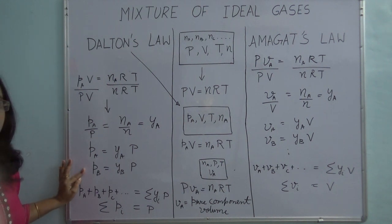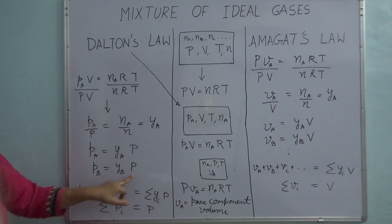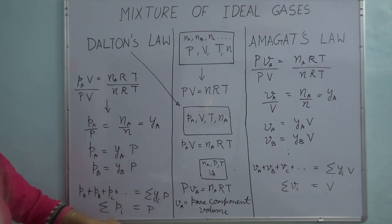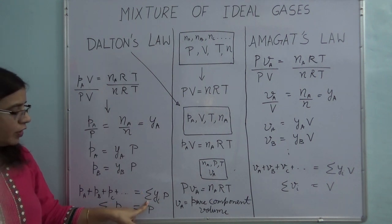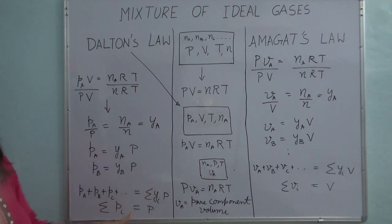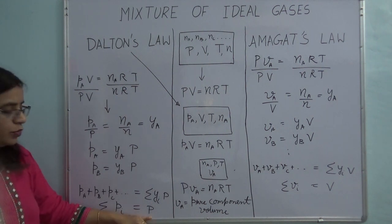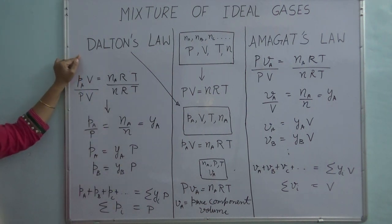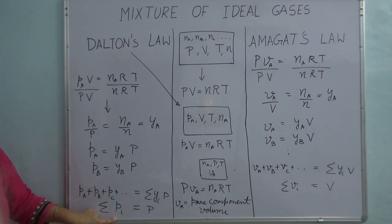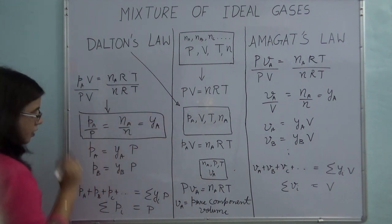Now let's add up all these equations for partial pressure. PA + PB + PC + … = Ya·P + Yb·P + Yc·P + … Since P is constant, I can pull it out of the summation, leaving only ΣYi. The summation of mole fractions always equals 1, so the summation of all partial pressures equals the total pressure. This is Dalton's Law: the sum of all partial pressures equals the total pressure of the mixture, and partial pressure divided by total pressure equals the mole fraction.